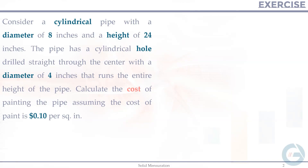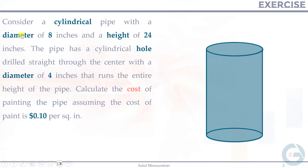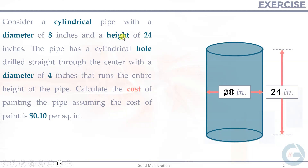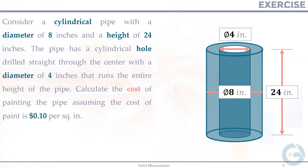Let's visualize the problem first. We have a pipe with a diameter of 8 inches and a height of 24 inches. It is a pipe, so the inner region is hollow — we have a hole with a diameter of 4 inches. This is the visual representation of the problem, and we are asked to calculate the cost of painting it.